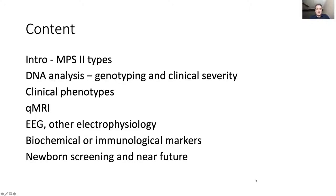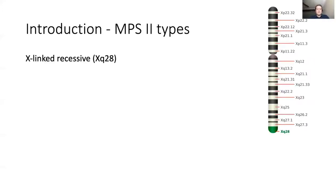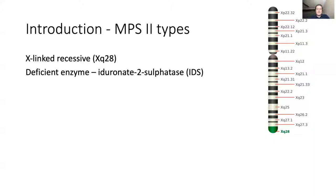The content of this talk covers MPS-2 types, DNA analysis, clinical phenotypes mostly focused on CNS disease, and methods to assess the phenotype. Hunter syndrome, MPS-2, is an X-linked recessive disorder linked to the X chromosome. The gene that is mutated is located here, and this mutation is linked to the deficiency of the enzyme that the gene encodes. The enzyme is named iduronate-2-sulfatase, IDS.